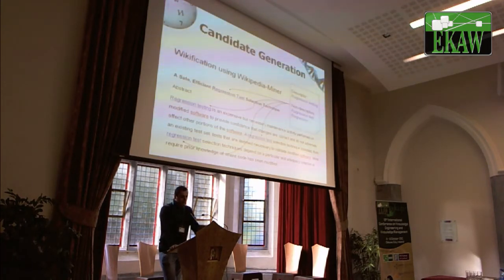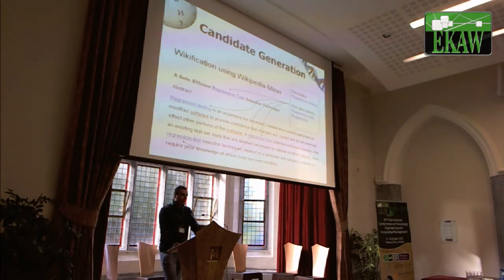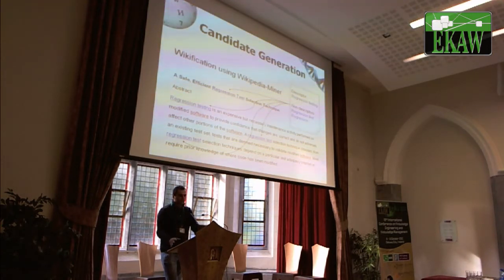For the keyphrase annotation of research documents, the first thing we do is use an open source toolkit called Wikipedia Miner, which tries to find the relationships, concepts, or topics from Wikipedia that appear in the documents we are trying to annotate with keyphrases.